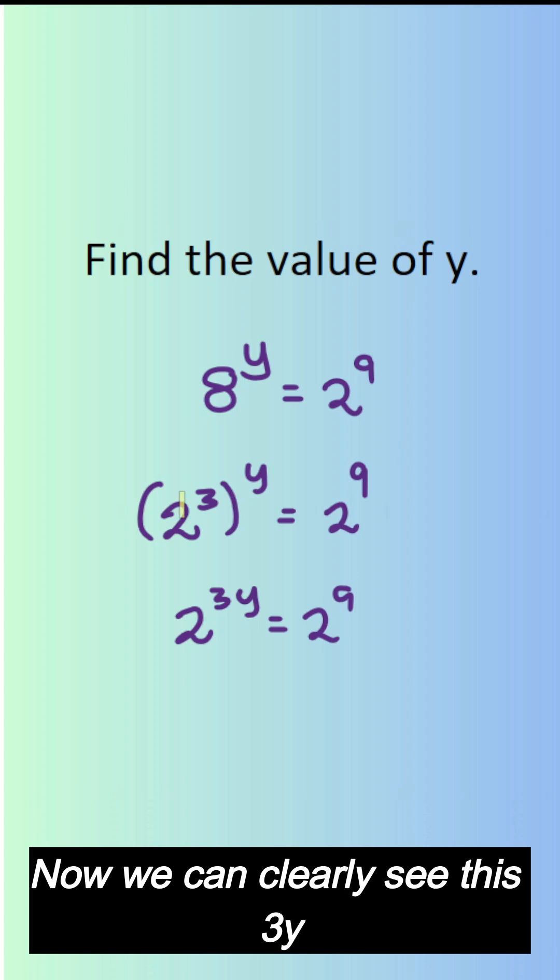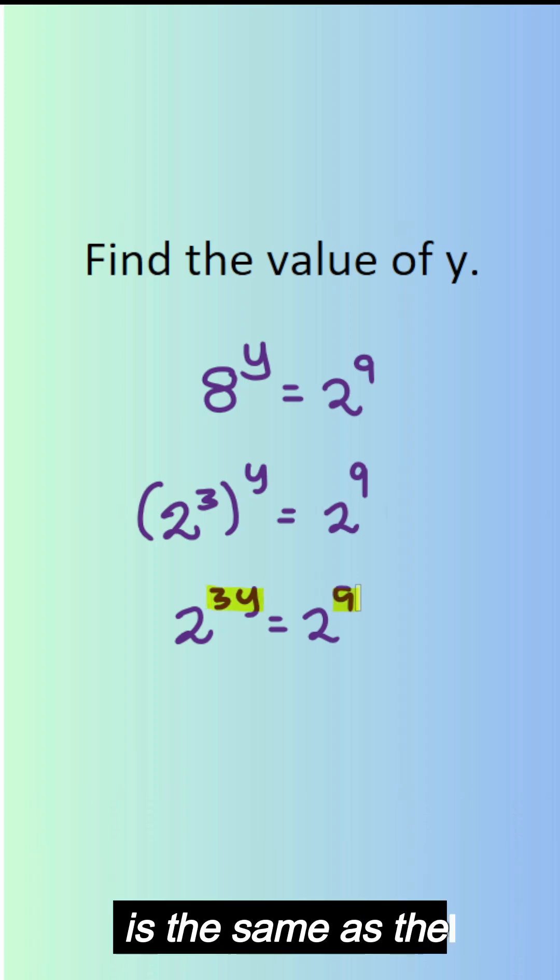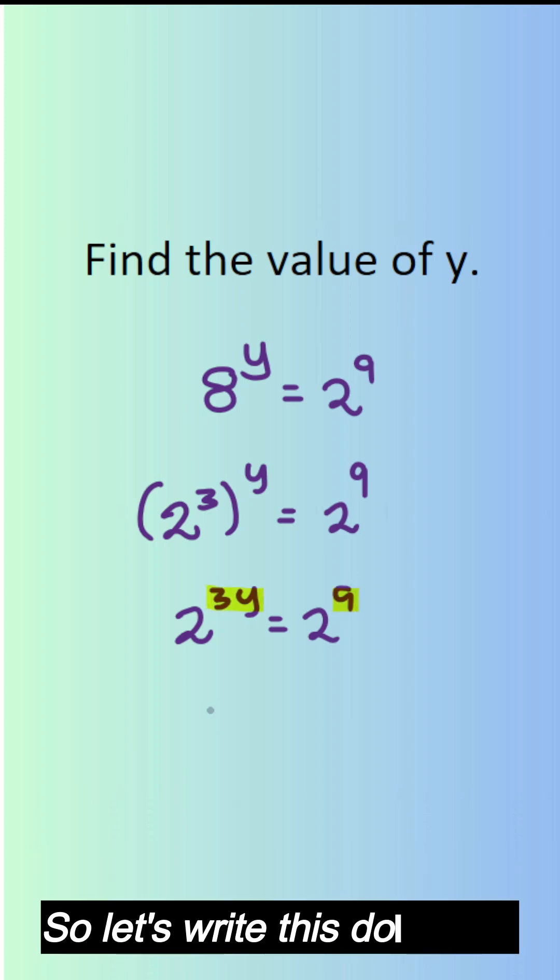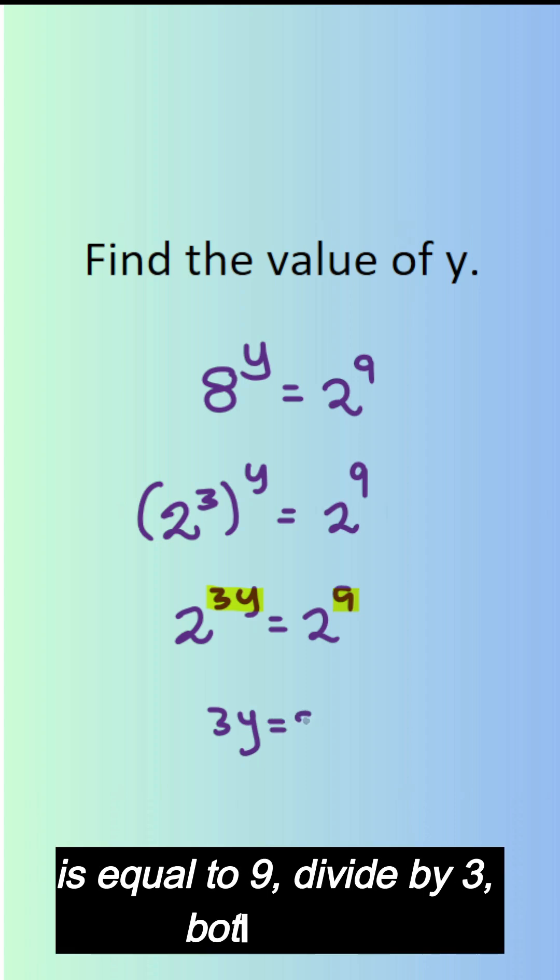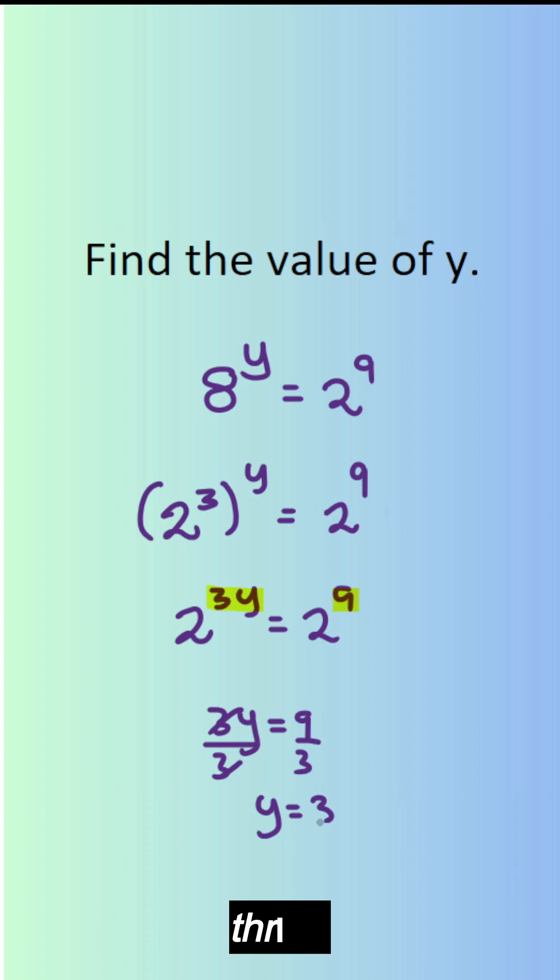Now we can clearly see this 3y is the same as the 9. Let's write this down: 3y is equal to 9, divided by 3 both sides, obviously y is equal to 3.